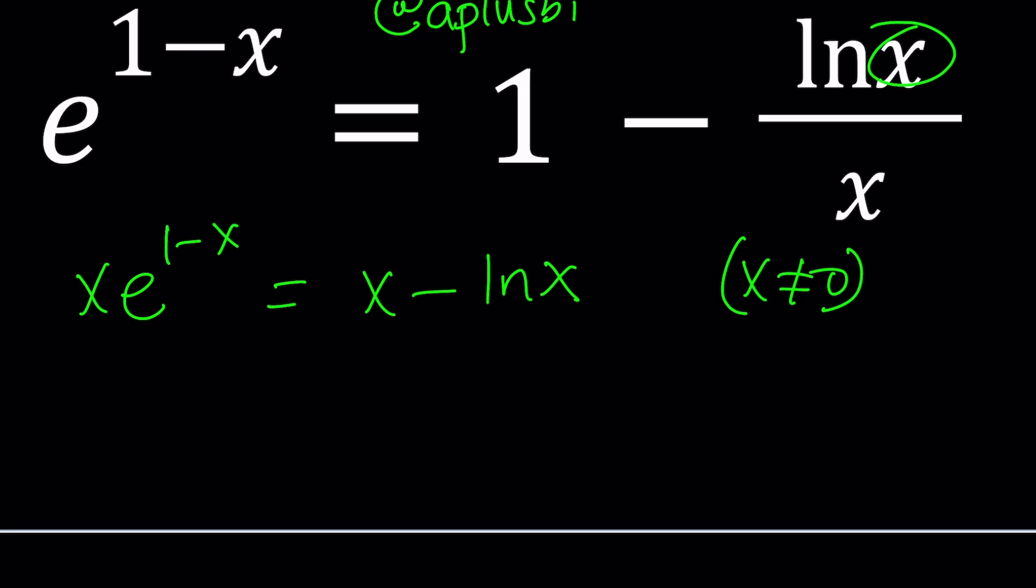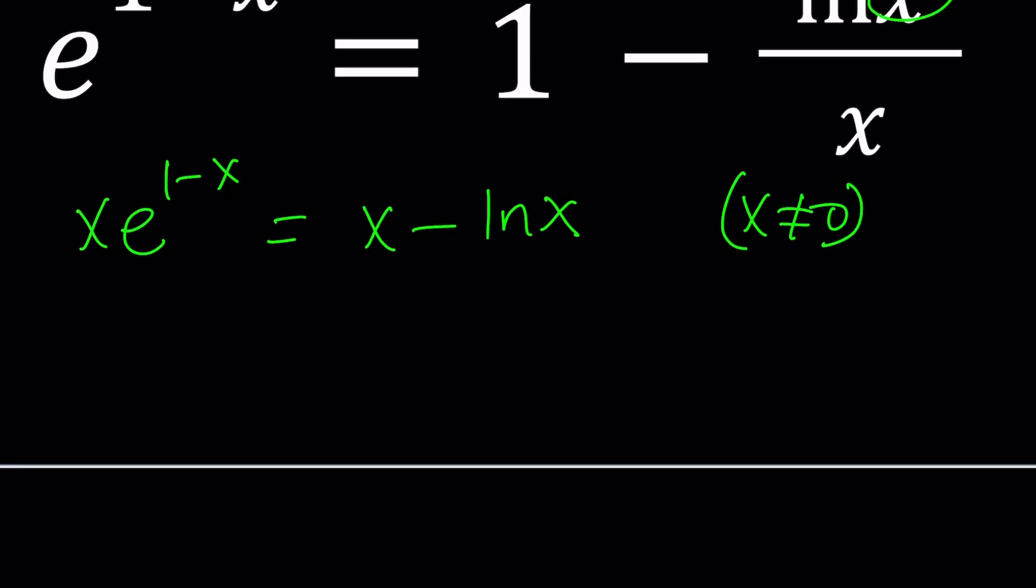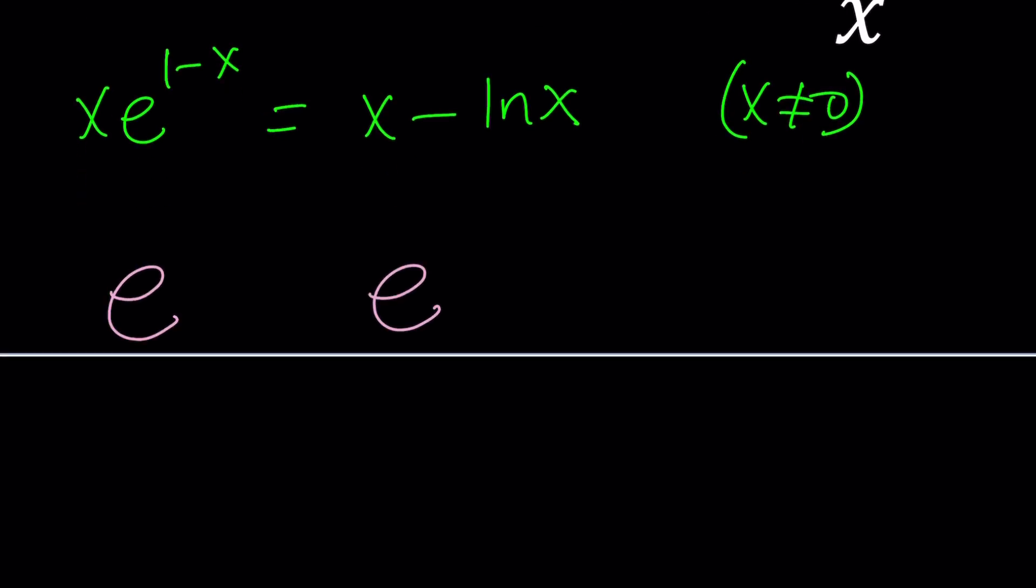We're going to go ahead and do e to the power both sides. So I'm going to prepare my e's and then bring the powers: x e to the 1 minus x, x minus ln x. And you're like why do you do this? There should be a good reason behind it right? And yes there is. Because if I do e to the power ln x that's equal to x. That's going to give me something nice.